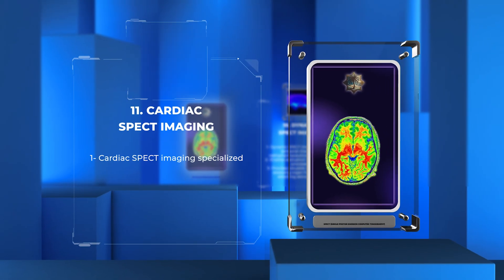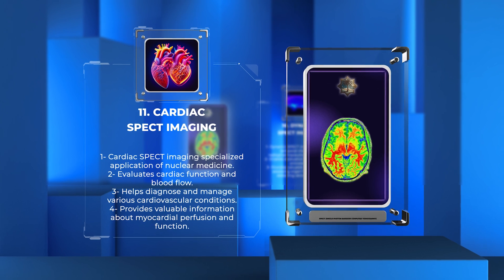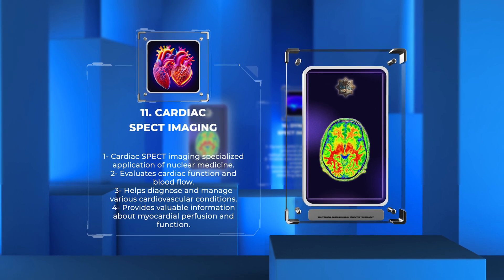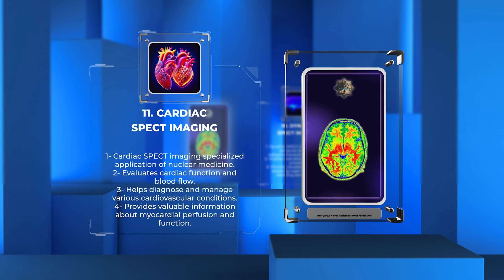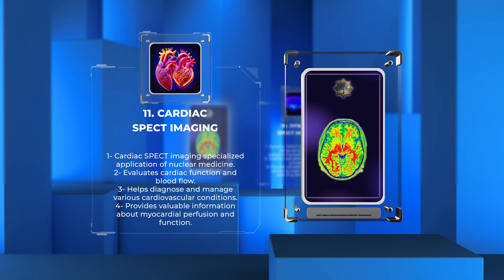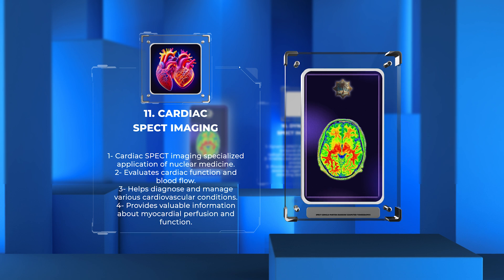Cardiac SPECT imaging is a specialized application of nuclear medicine that focuses on the evaluation of cardiac function and blood flow. It plays a pivotal role in diagnosing and managing various cardiovascular conditions, such as coronary artery disease, myocardial infarction, and myocardial viability assessment. Cardiac SPECT imaging provides valuable information about myocardial perfusion and function, aiding in treatment planning and patient management.